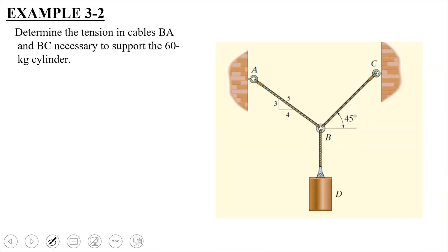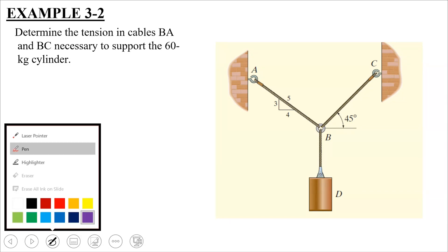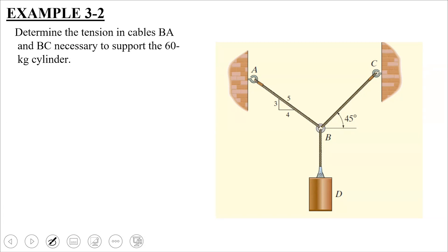We are going to start with Example 3-2, in which cylinder D has a mass of 60 kg and is supported by a cable arrangement as shown in the figure. The system is in equilibrium, and you need to determine the tensions — the forces in cables BA and BC. So you have a cylinder of mass 60 kg supported by two cables BA and BC, and you need to determine the tension in each cable. We start by drawing the free body diagram of cylinder D.